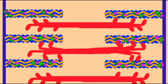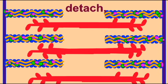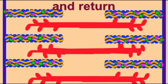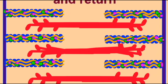This cycle of attach, pivot, detach, and return repeats itself as long as the calcium is bound to troponin.